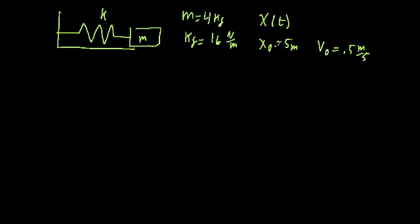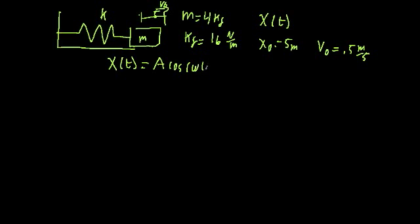Essentially, at time t equals 0, we start off by displacing our system from equilibrium by 5 meters, and then before we let go, we also push it so it has an initial velocity of 0.5 meters per second. We know that the general solution for this system will be of the form A cosine(ωt) plus B sine(ωt). We're going to figure out what omega is and what A and B are.